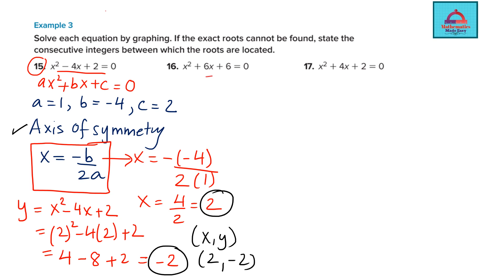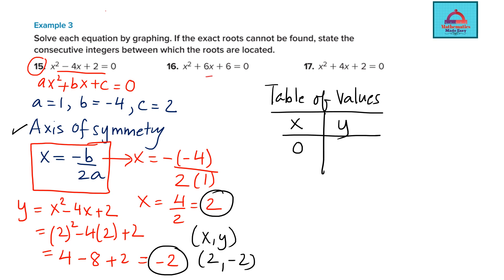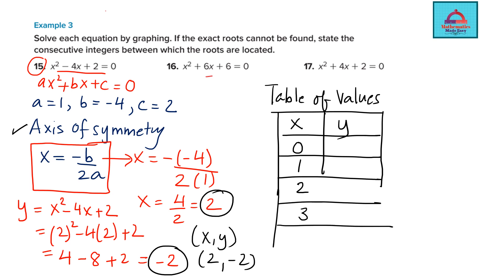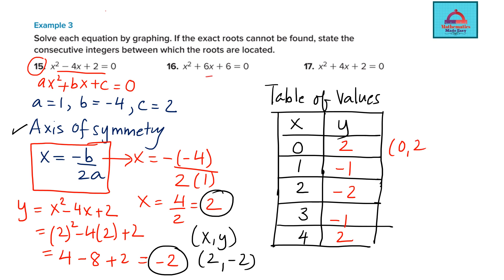Now for the graph we need the table of values. You may use your calculator to get these numbers quickly. Taking x values of 0, 1, 2, 3, 4 and plugging into the equation: when x = 0, y = 2; when x = 1, y = -1; when x = 2, y = -2 (the vertex); when x = 3, y = -1; when x = 4, y = 2. So the five points are (0, 2), (1, -1), (2, -2), (3, -1), (4, 2).